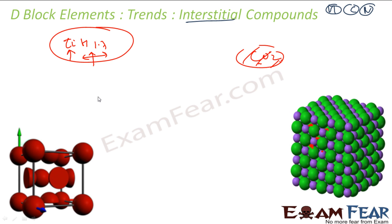But they have different properties. These interstitial compounds have high melting point and boiling point compared to pure metals. They are very hard, with hardness similar to diamond. They are chemically inert, and the metallic conductivity is retained, but their ductility and malleability is reduced.